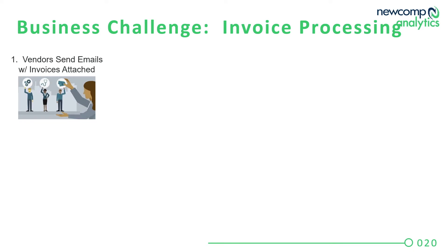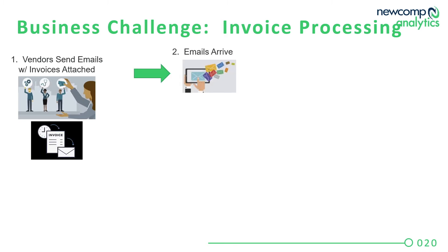We're going to walk through an example of a business process that has several manual steps. Firstly, we have vendors who are sending invoices for their services to a designated email address. We know emails have the word 'invoice' in the subject line and invoices are sent as attachments in either PDF or image format. When the emails arrive, attachments are saved by a human into a folder on OneDrive.